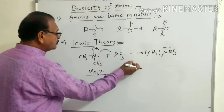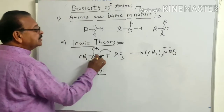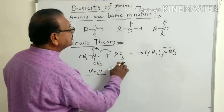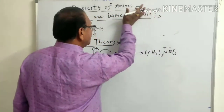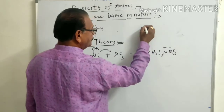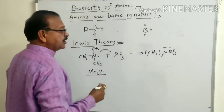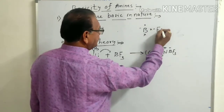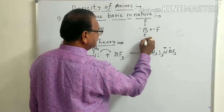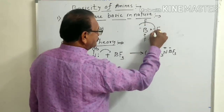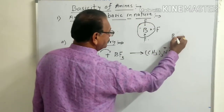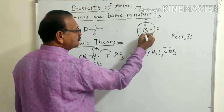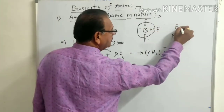So electron pair donors are called as bases according to Lewis theory, and the lone pair can be shared or donated to the electron-deficient species. For example, in boron trifluoride, boron has atomic number 5, so it contains 2 electrons in the first shell and 3 electrons in the outermost shell. These 3 electrons can be shared with 3 fluorine atoms.